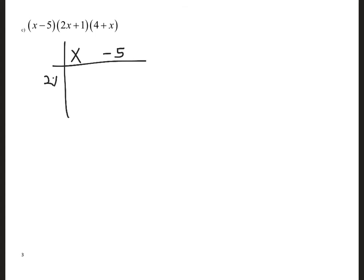Using the table: 2x squared, 2x, 1 — so this gives me 2x squared minus 10x, then x minus 5. That gives me 2x squared minus 9x minus 5.